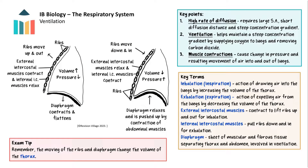Ventilation is the movement of the thorax to get air into and out of the lungs. This supply of oxygen to the lungs and removal of carbon dioxide helps maintain a steep concentration gradient for gaseous exchange.